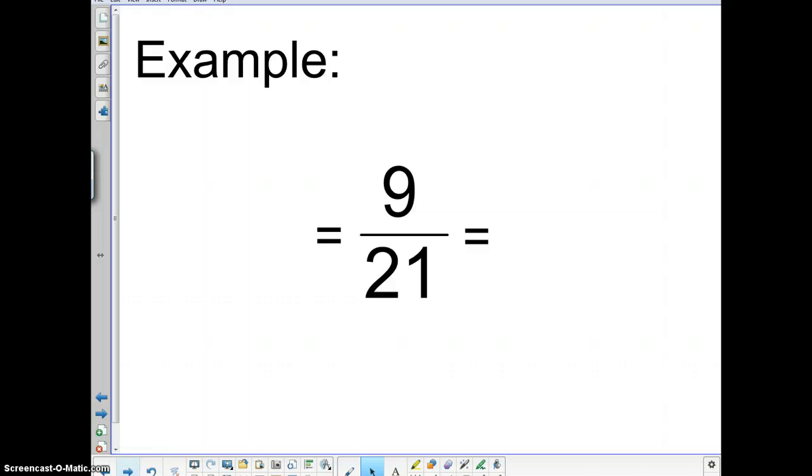Alright. And now we have one fraction, nine twenty-firsts. Okay. Now this is not in simplest form because neither of these are prime numbers. So what we have to do is we have to find out the greatest common factor between these two. So I'm going to put nine and do the quick prime factorization of three and three.